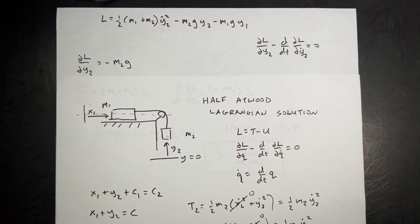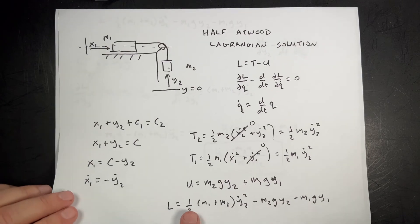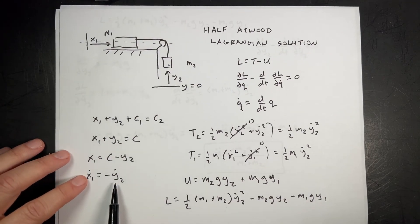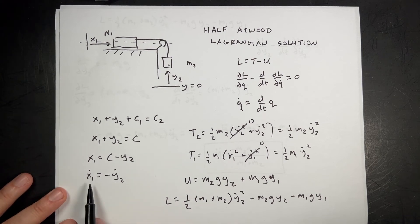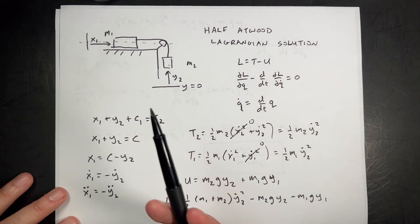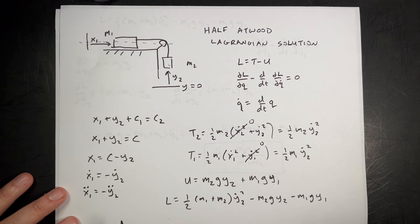I can go over here and find the acceleration for x. If I take the derivative, I get x1 double dot is negative y2 double dot. So now I have the acceleration for mass 1 and it's going to be positive because y2 is negative, which means it's accelerating this way. Which again, that makes sense.